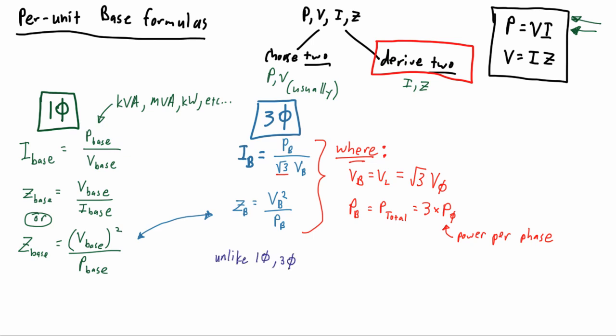Looking at the conditions we've set out, the voltage base equals the line voltage, but it's also equal to the square root of three times our phase voltage, which is really just a conversion of phase voltage to line voltage.